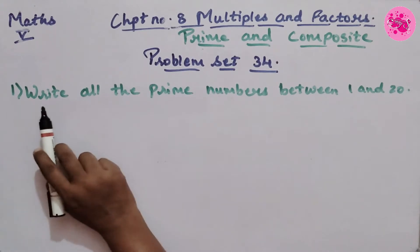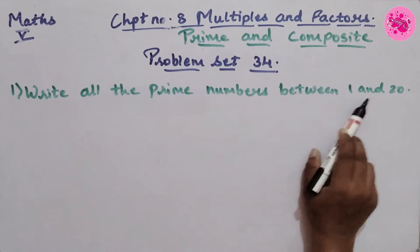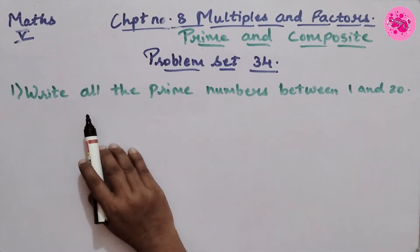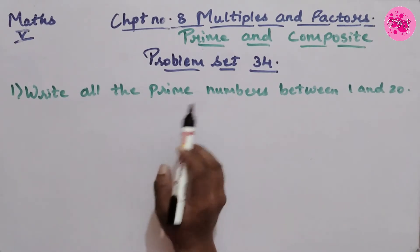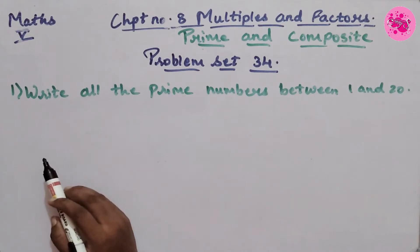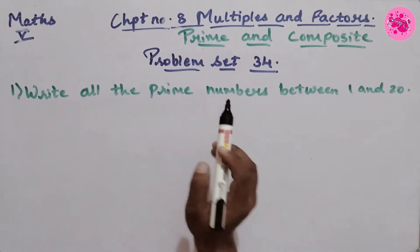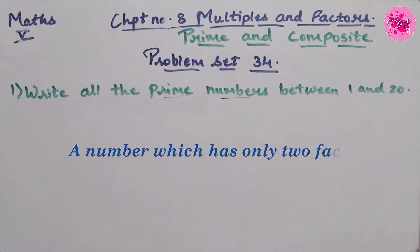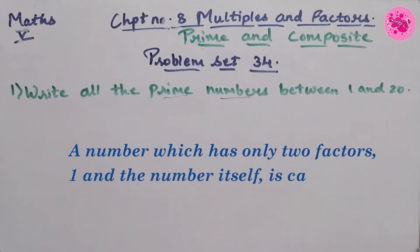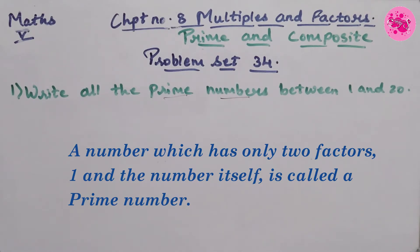Question number 1: Write all the prime numbers between 1 and 20. Now before writing the answer, let's recall what a prime number is, because we learned this in a previous video. A number which has only two factors — one and the number itself — is called a prime number. So in a prime number we have only two factors: one, which is the common factor, and the number itself.